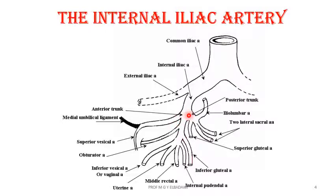The posterior division gives the ilio-lumbar, the lateral sacral, and the superior gluteal arteries, all of which are parietal branches.